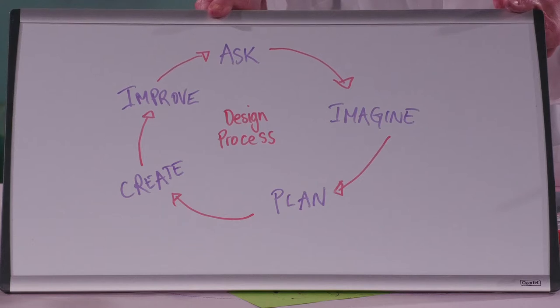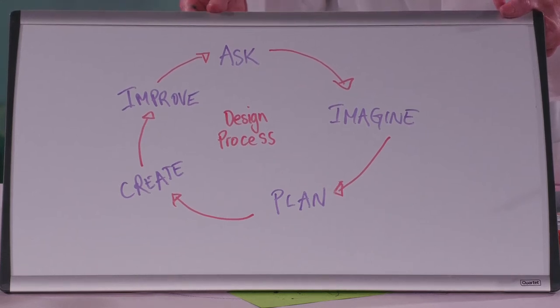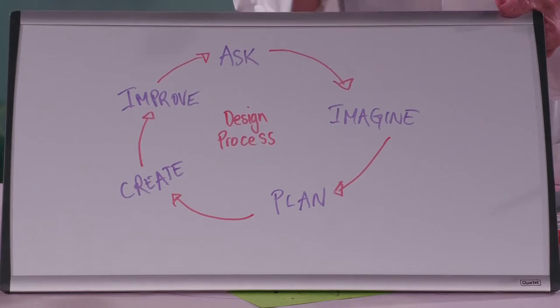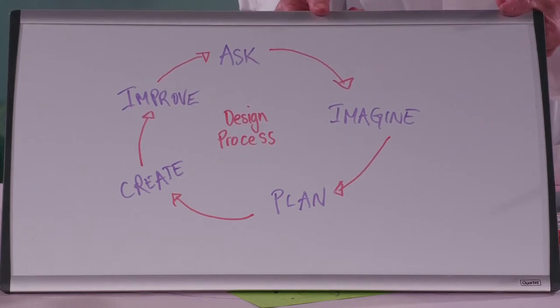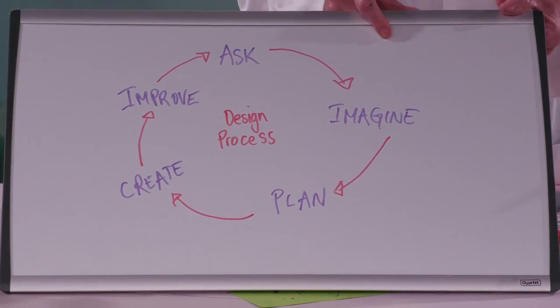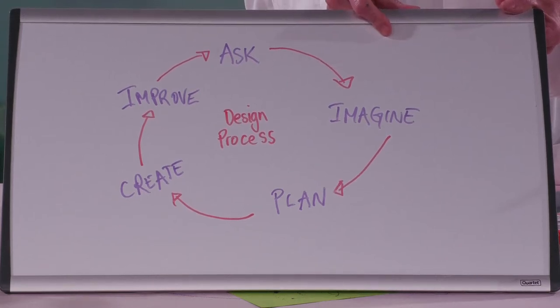Before you start building your WiggleBot, let's have a look at the design process. We've got to ask the question first: what are we making? We want to make something that wiggles. What are the constraints? They're the things that are limited - we've got limited resources, limited time and space. Then you've got to imagine. What do you want to do? Maybe you could write down on your engineering notepad drawings of what you imagine you'd like to make.